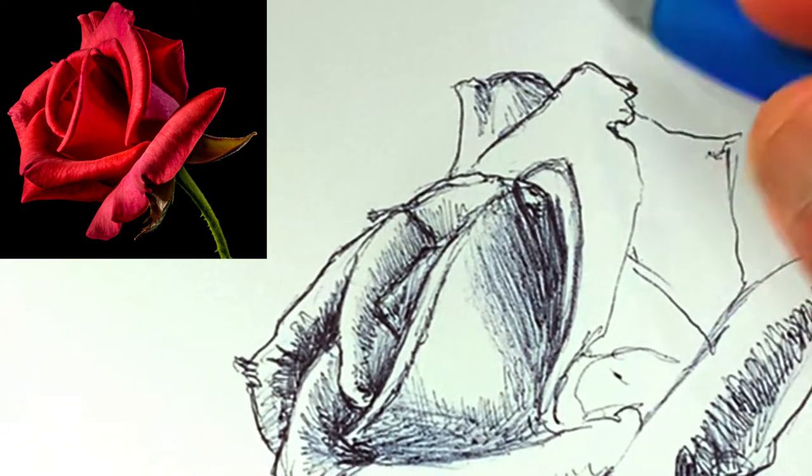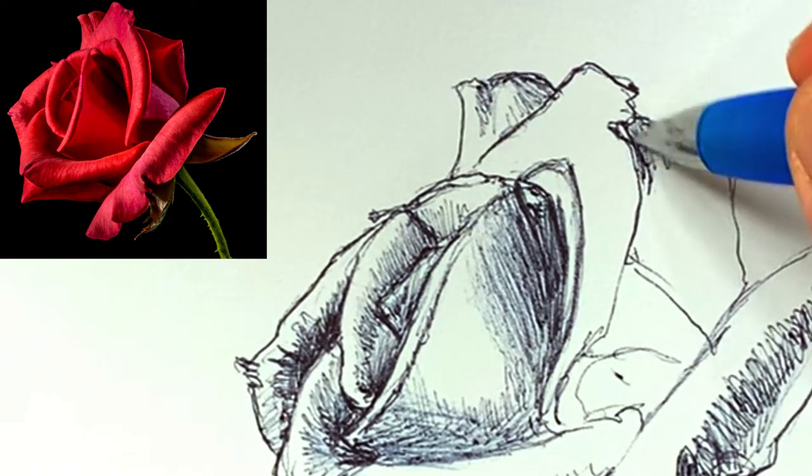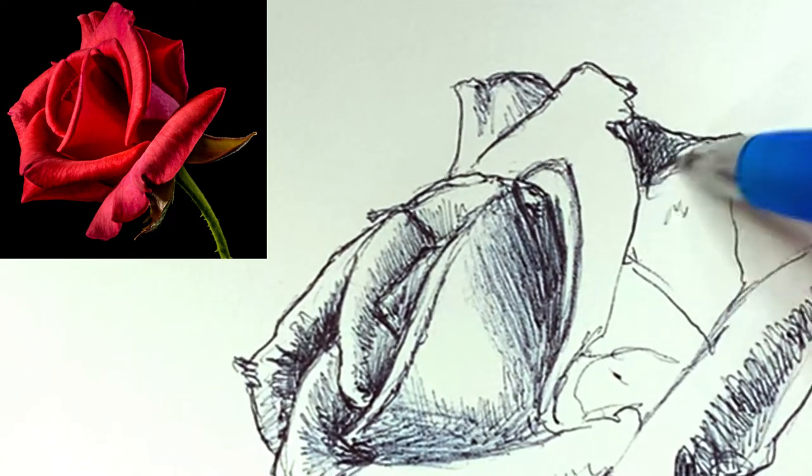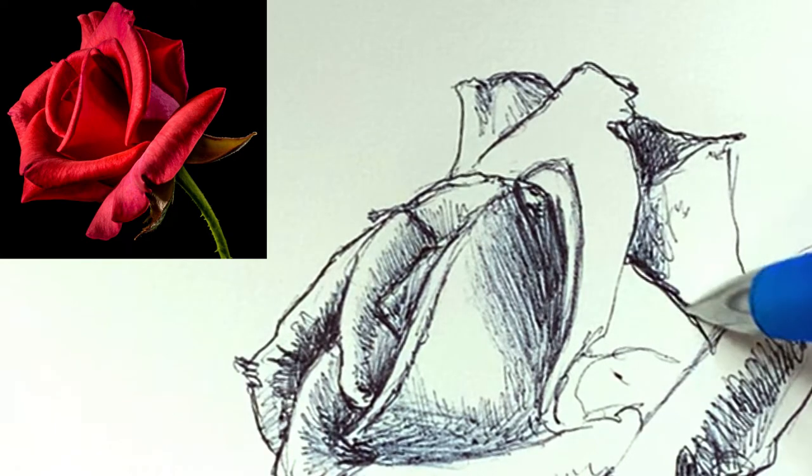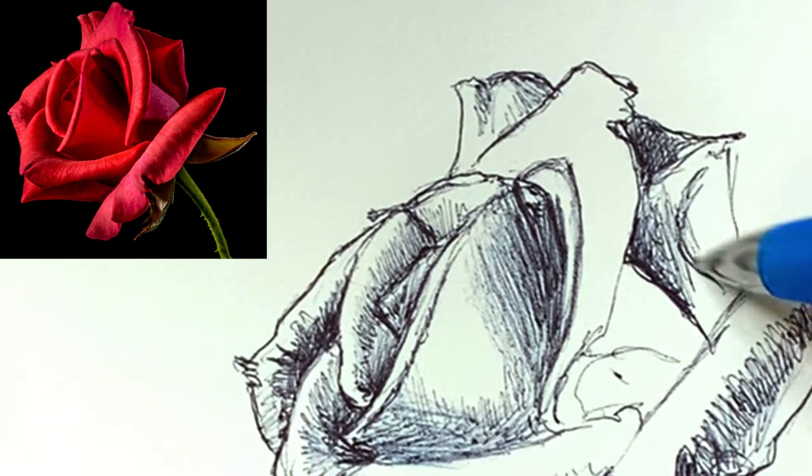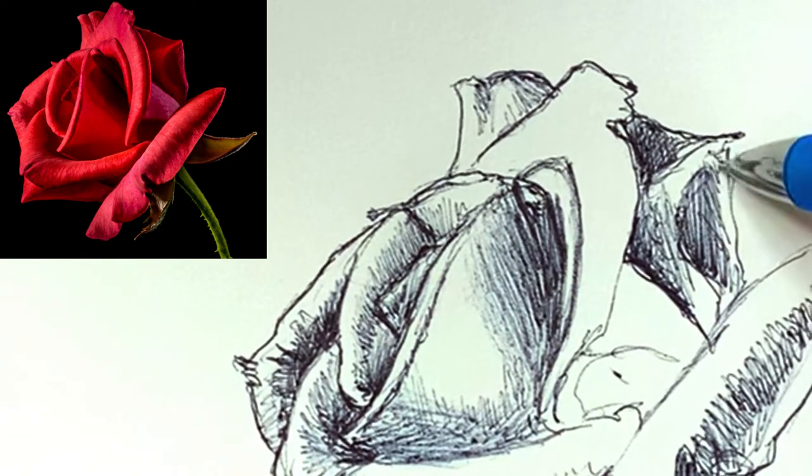So I'll just keep going as I mentioned. Like here there's a dark shadow behind this front petal. I'll go ahead and mark a line, a shadow line, and put in the shadows right next to that.